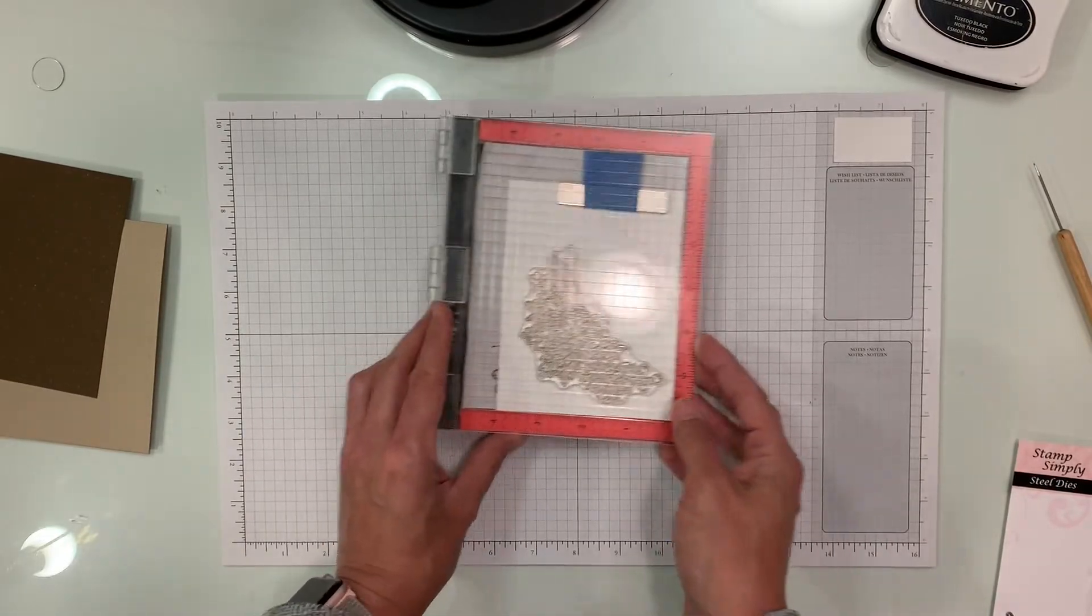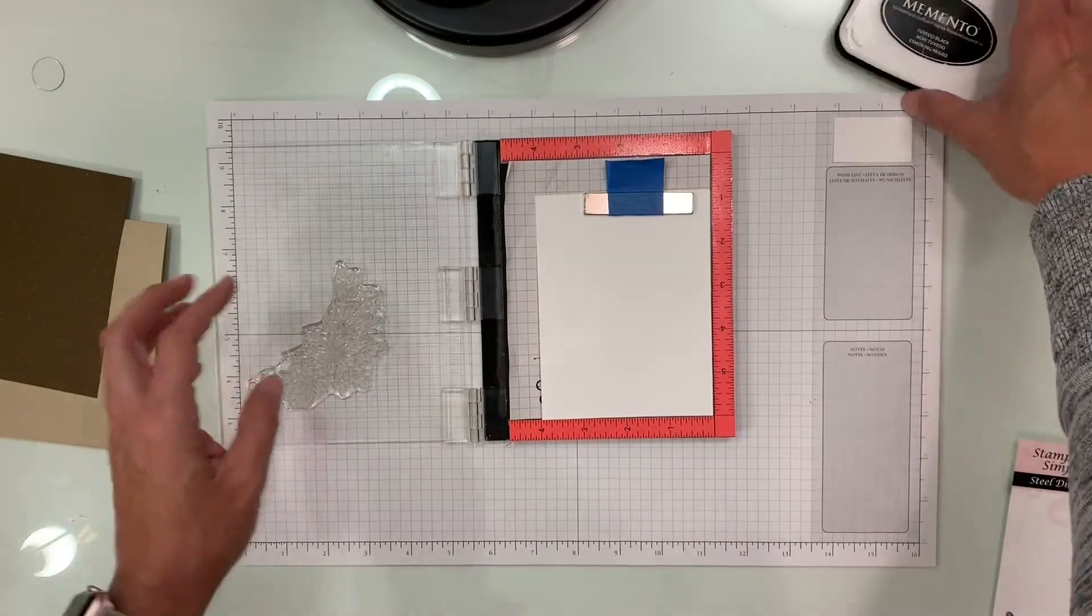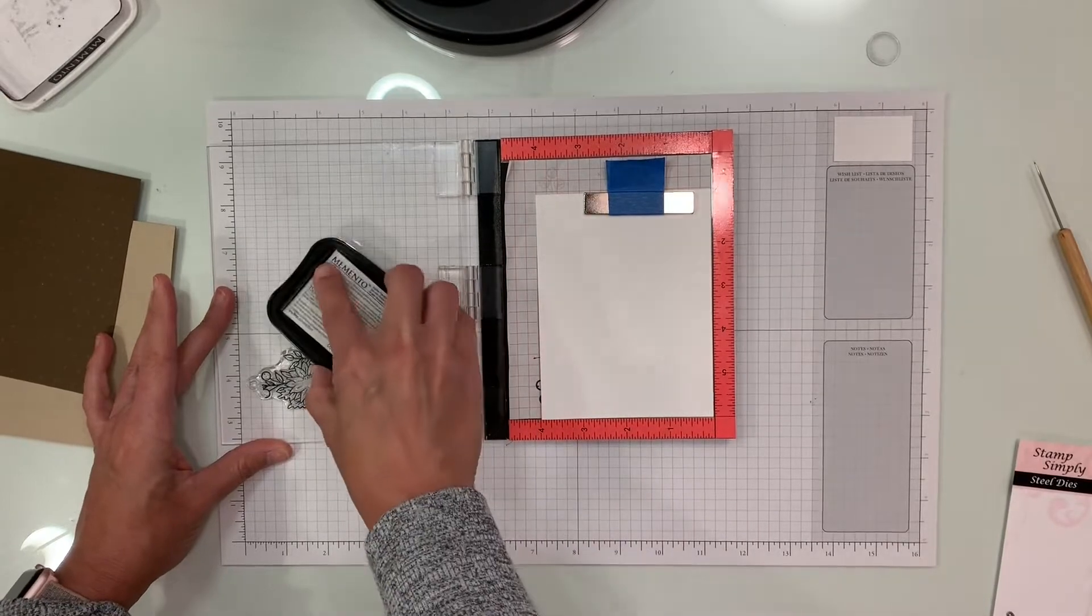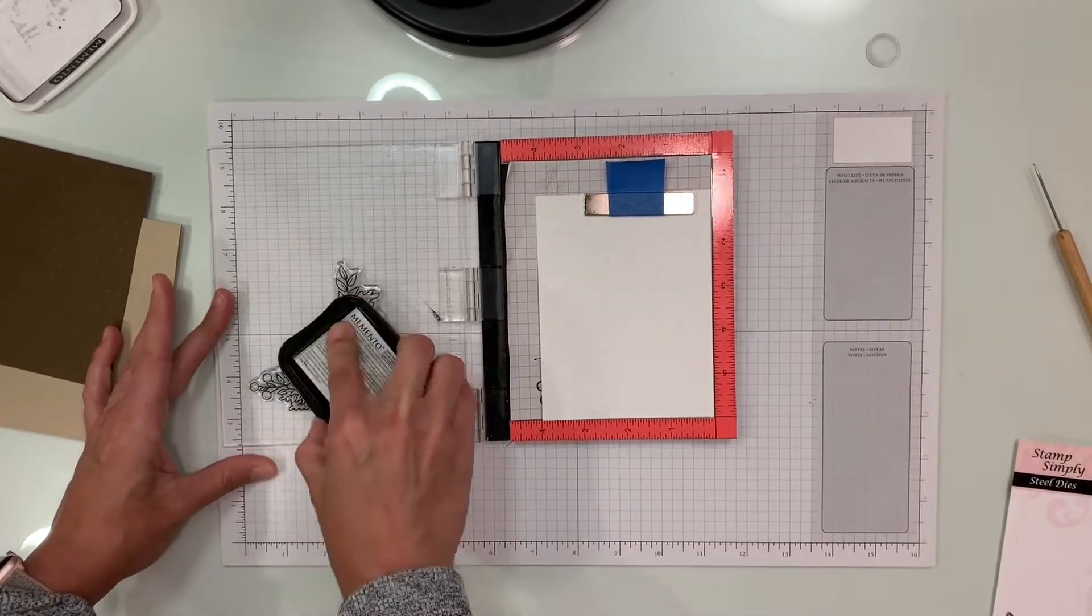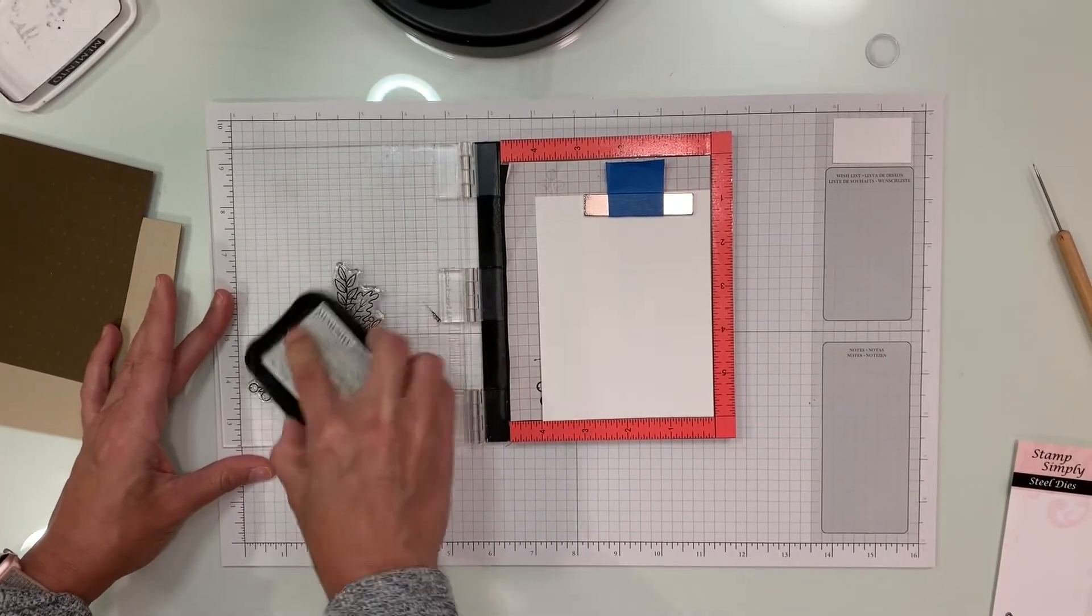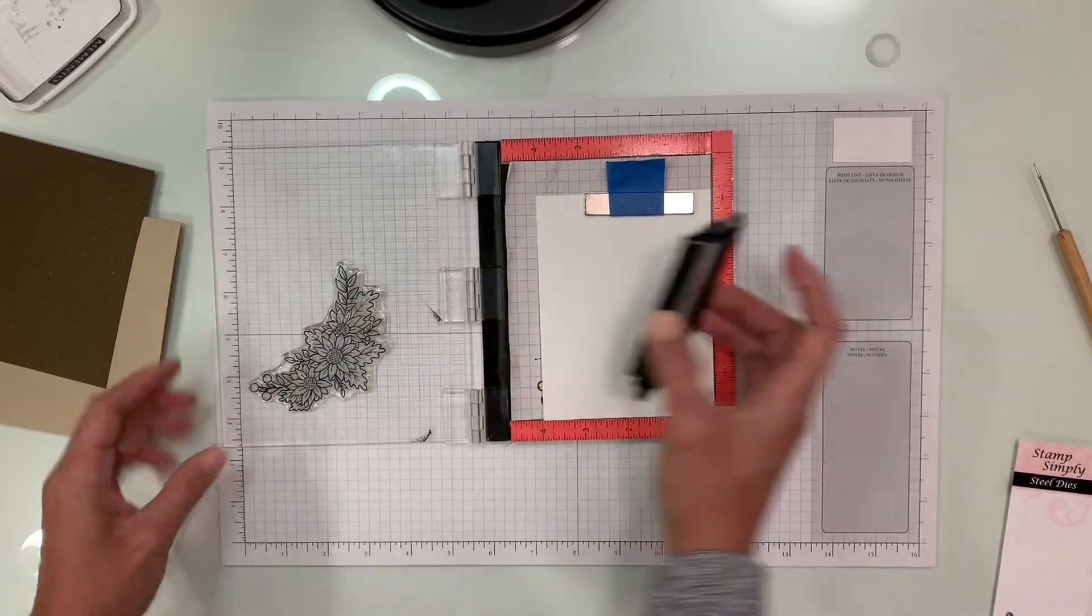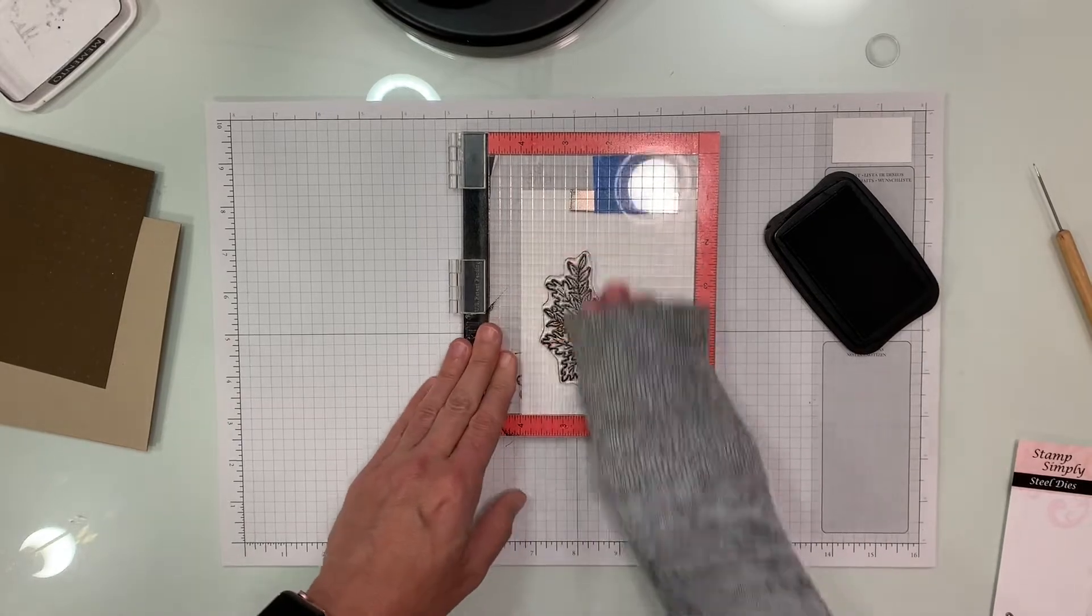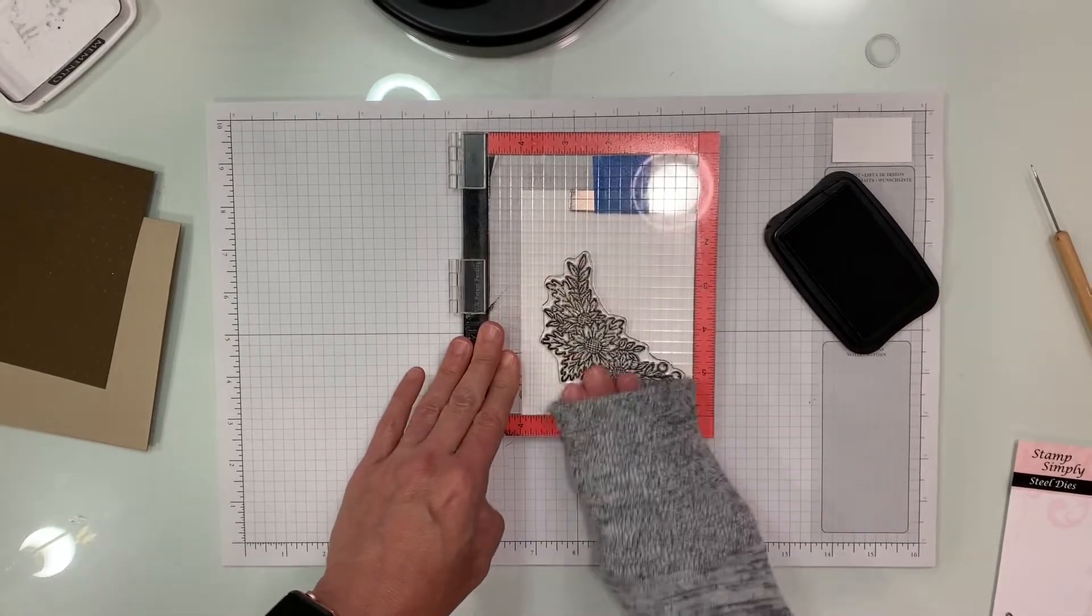What we're going to do is we're just going to go ahead and stamp this floral image on a panel of white. So I'm going to ink this up and stamp that and make sure we get a nice clean image. That looks really good.